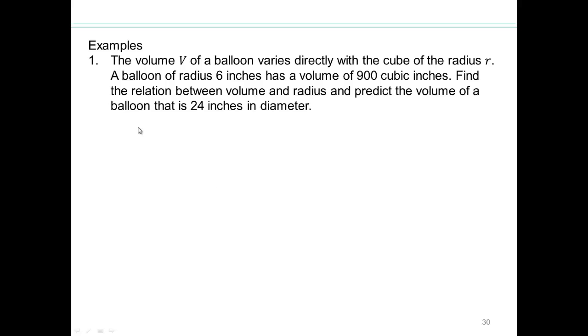Predict the volume of a balloon that is 24 inches in diameter. So directly varies, which means what? V is going to be some constant k times the cube of the radius. So v equals k times r cubed. In order to fully know what this relationship is, we have to find the value of k. So we have to use what is given to us. V is 900 and r is 6.